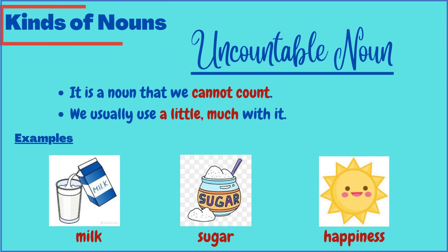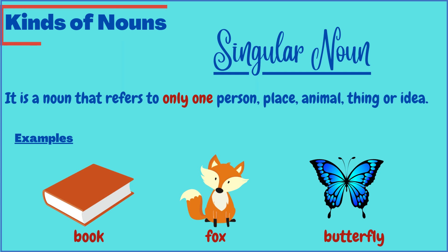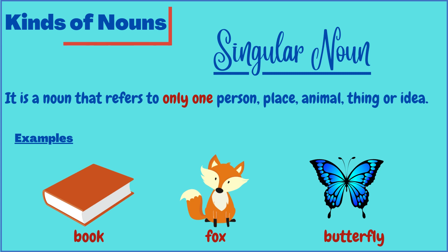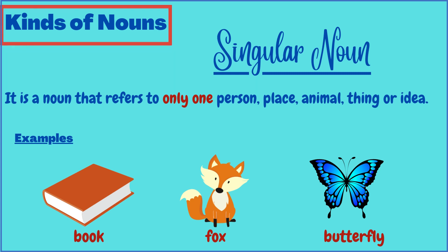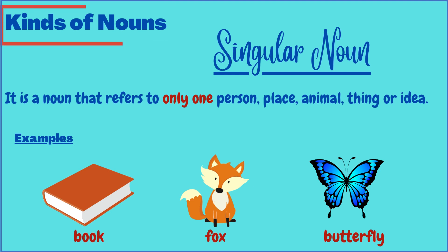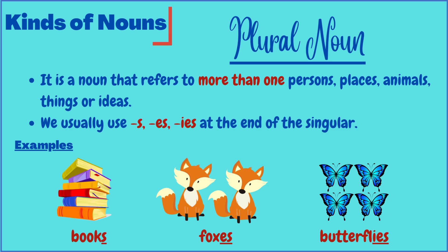The next two kinds are based on number: singular and plural nouns. A singular noun refers to a single or only one person, place, animal, thing, or idea. Examples are 'a book,' 'a fox,' and 'a butterfly.' The articles 'a' and 'an' can be used with singular nouns only, and not the plural ones.